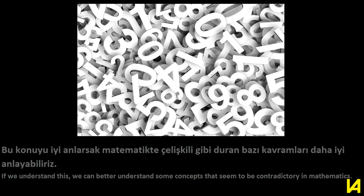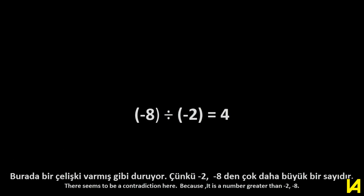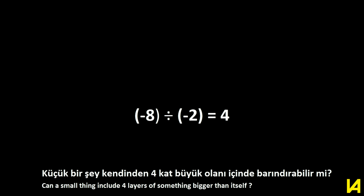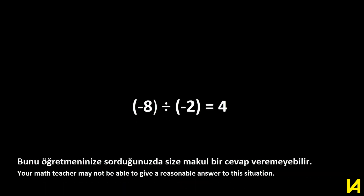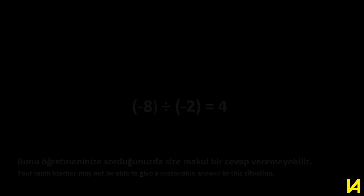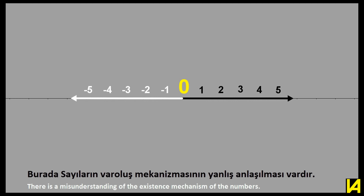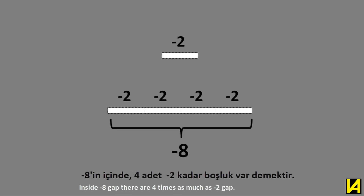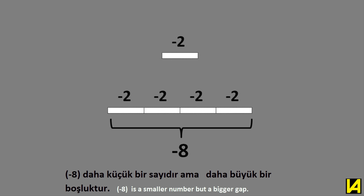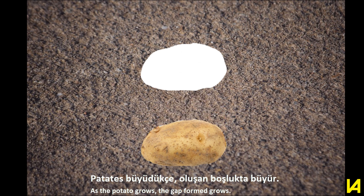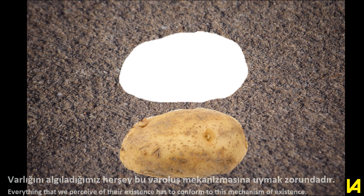If we understand this, we can better understand some concepts that seem contradictory in mathematics. For example, negative eight divided by negative two — there seems to be a contradiction here because negative two is a number greater than negative eight. Can a small thing include four layers of something bigger than itself? In fact there is no contradiction; this means inside a negative eight gap there are four times as much as a negative two gap. Negative eight is a smaller number but a bigger gap.